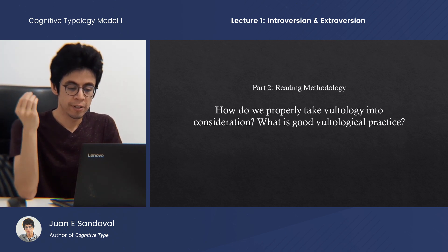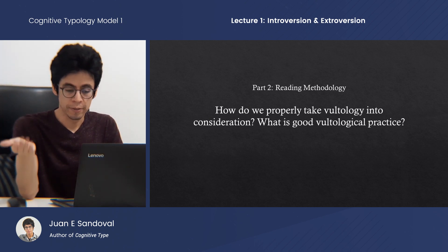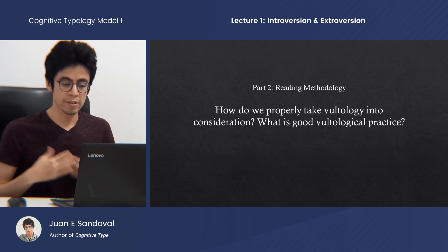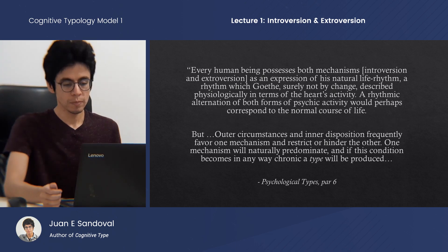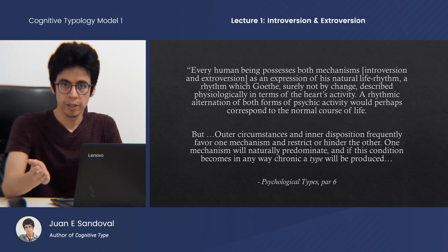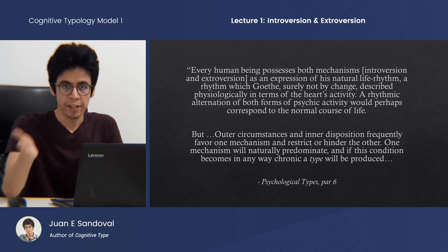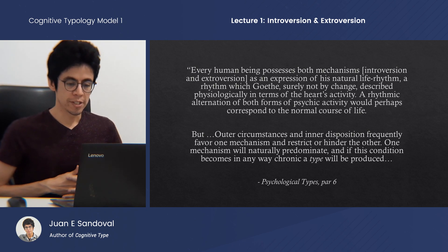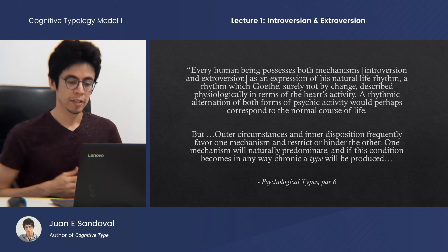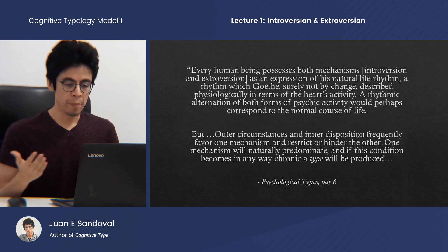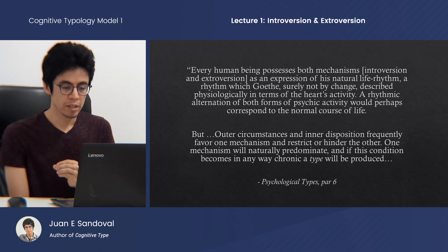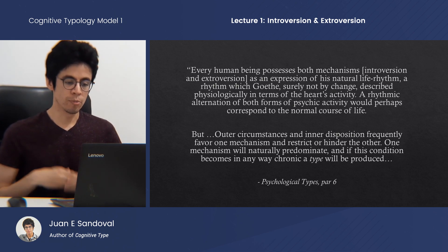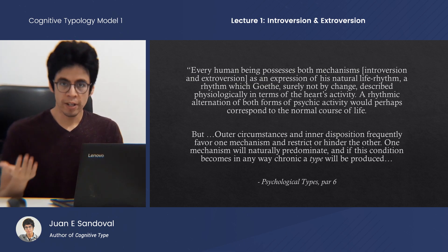Psychological insight plus voltological insight is greater than psychological insight alone. The second part of this talk is devoted to executing these principles correctly in a therapeutic setting. Jung said: every human being possesses both mechanisms — introversion and extroversion — as an expression of his natural life rhythm, a rhythm which goes, surely not by chance, described physiologically in terms of the heart's activity. A rhythmic alteration of both forms of psychic activity would perhaps correspond to the normal course of life. But outer circumstances and inner disposition frequently favor one mechanism and restrict the other. One mechanism will naturally predominate, and if this condition becomes in any way chronic, a type will be produced.